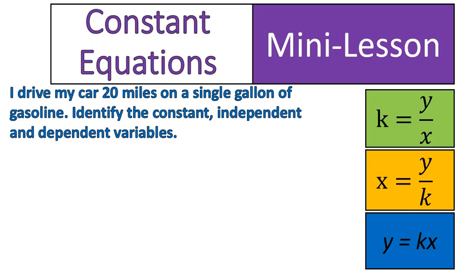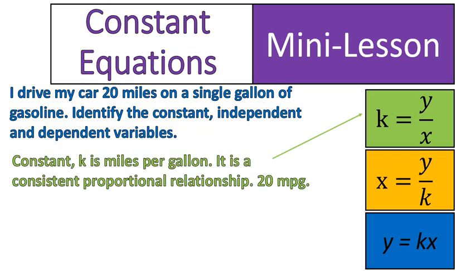I drive my car 20 miles on a single gallon of gasoline. I need to identify the constant, independent, and dependent variables inside of this phrase here. So let's start off with the constant. The constant k is miles per gallon. It's a consistent proportion that doesn't change. It doesn't matter how many miles I drive, I'll still get 20 miles per one gallon.